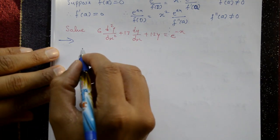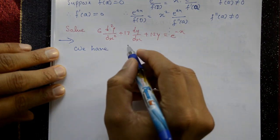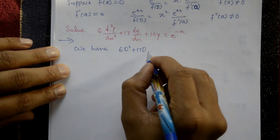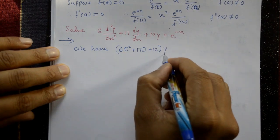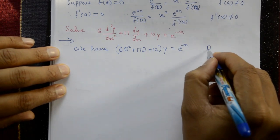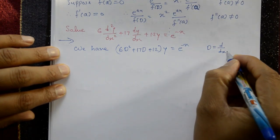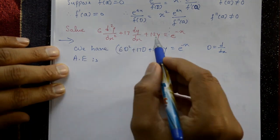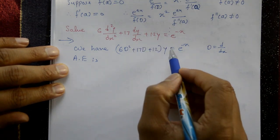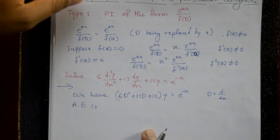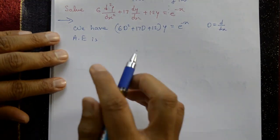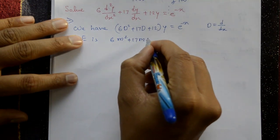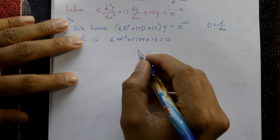The solution: we have the operator (6D² + 17D + 12)y = e^(-x), where D stands for d/dx. Now the auxiliary equation is 6m² + 17m + 12 = 0.